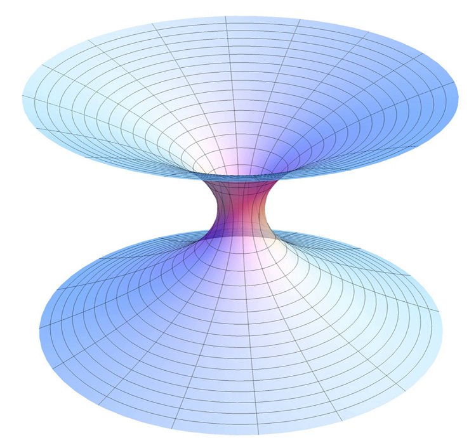Theoretical physics is a branch of physics that employs mathematical models and abstractions of physical objects and systems to rationalize, explain, and predict natural phenomena.